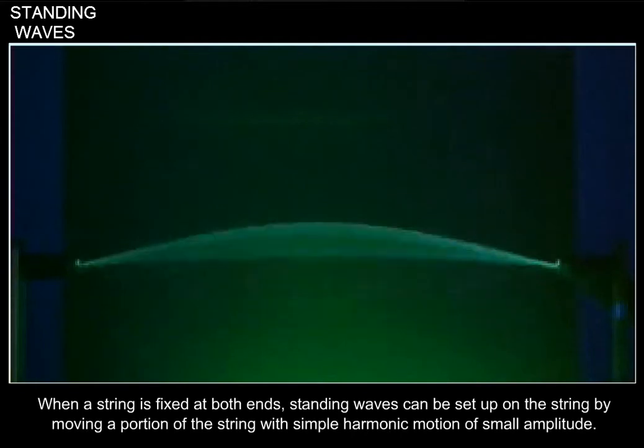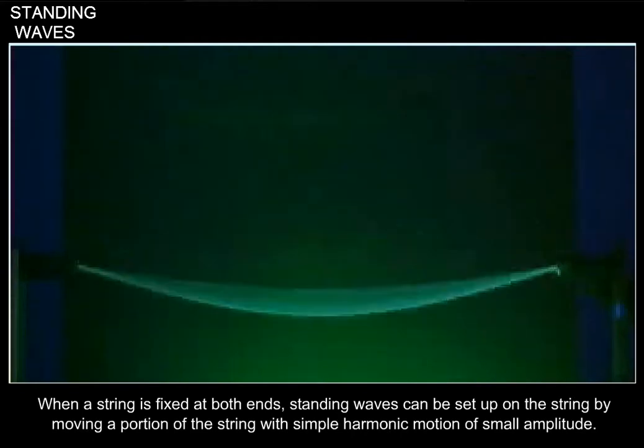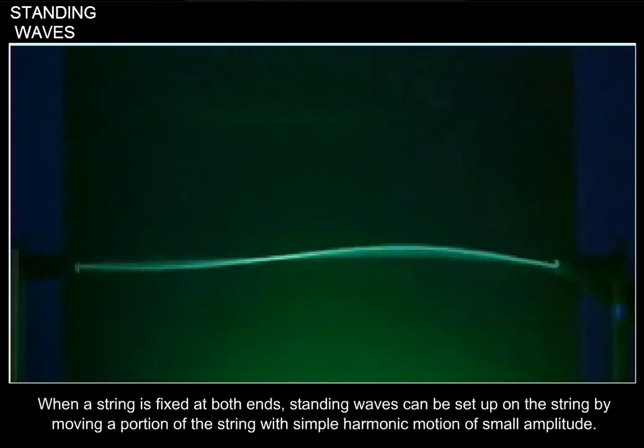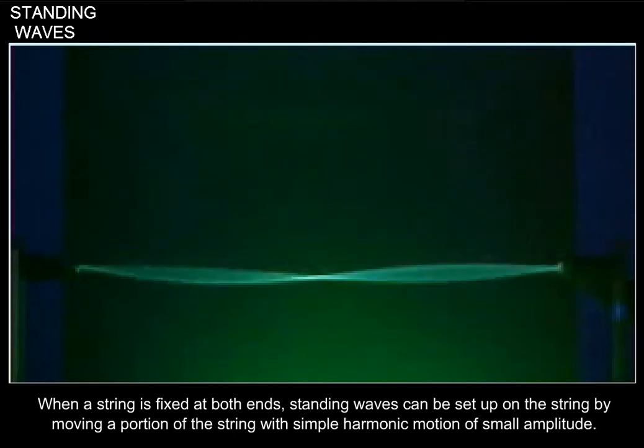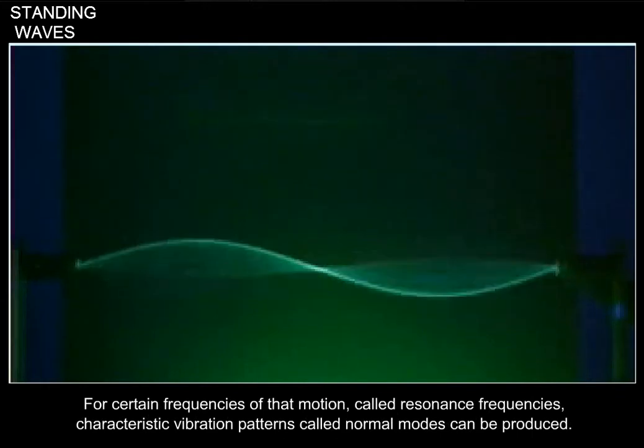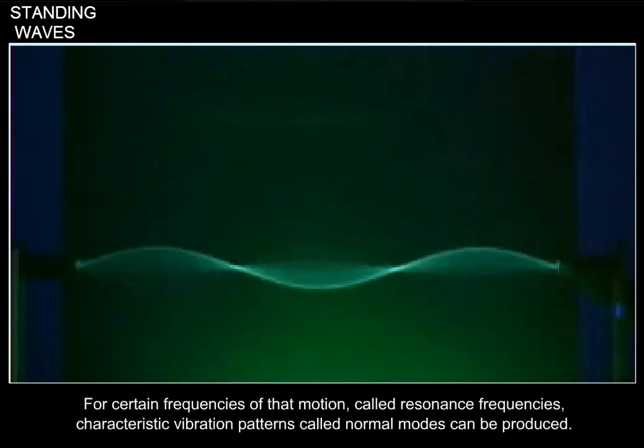When a string is fixed at both ends, standing waves can be set up on the string by moving a portion of the string with simple harmonic motion of small amplitude. For certain frequencies of that motion, called resonance frequencies, characteristic vibration patterns called normal modes can be produced.